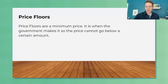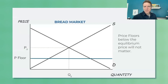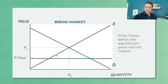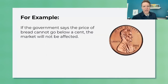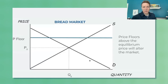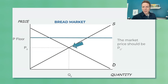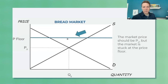Price floors are a little confusing because a price ceiling that matters is below the equilibrium, while a price floor that matters is above it — the opposite of a house. A price floor down here won't matter; it's only price floors above the equilibrium price that matter. The market tries to go lower but gets stuck at the price floor.